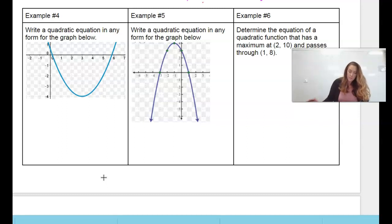So if we look at example 4, I can write a quadratic equation in any form. So I have to look, and I see, okay, I do have my vertex. I know that that's at 3, negative 4. And my roots, ooh, I don't have my roots because it's not crossing right at 6, and it's not crossing right at 0.